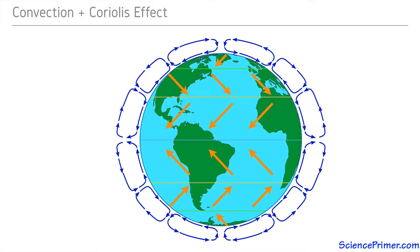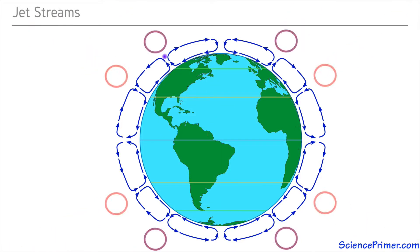In addition to causing the predictable prevailing wind patterns present near the ground, interactions between the large atmospheric convection cells and the Coriolis effect create strong concentrated jets of air near the top of the troposphere where the convection cells meet.